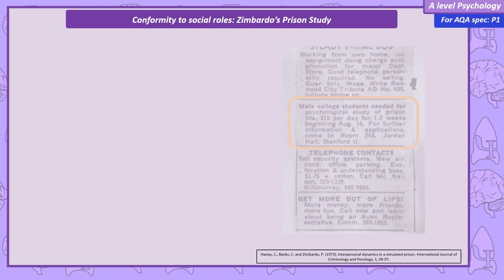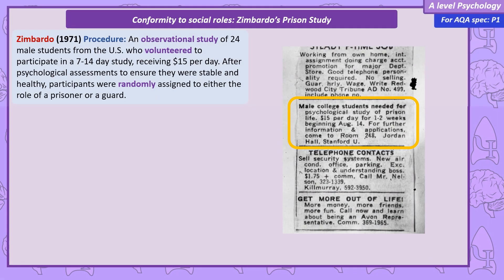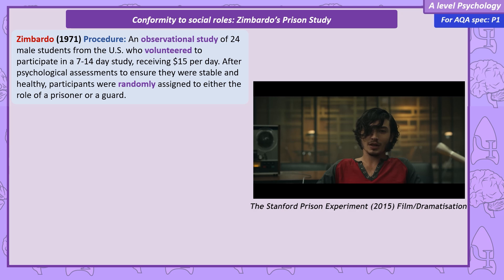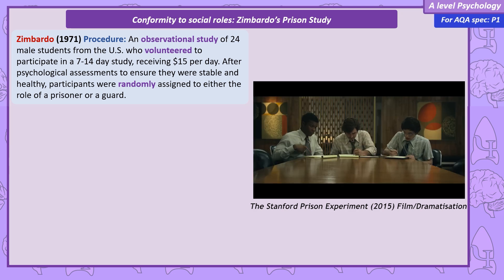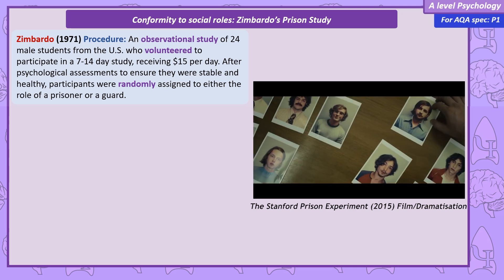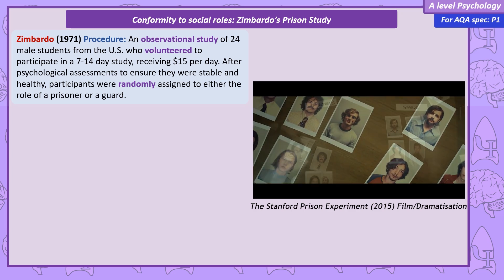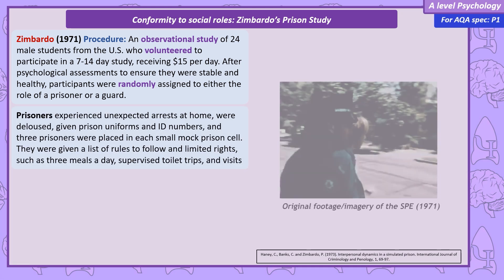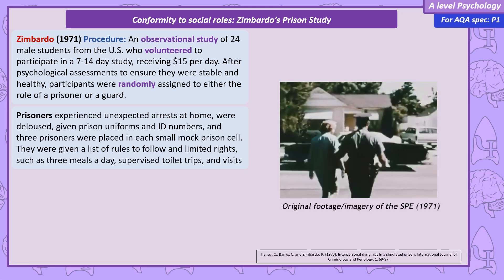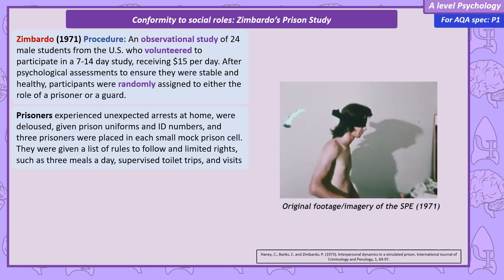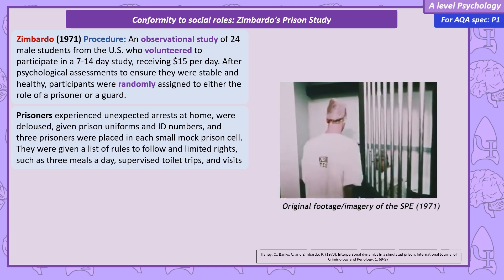You can see here the original advert asking for volunteers for a 7–14 day study on prison life, for $15 a day. Applicants were given psychological testing to ensure mental stability, and ultimately 24 were selected. The participants were randomly assigned to be prisoners or guards to reduce the likelihood of participant variables. The prisoners' experiences included being unexpectedly arrested at home by real police officers, being booked, deloused, and given a basic prison uniform with their assigned ID number on it.